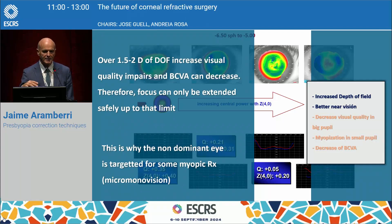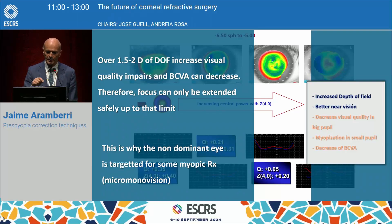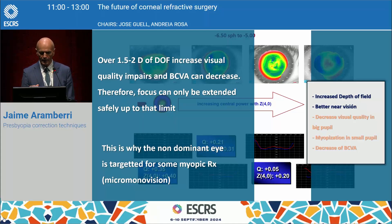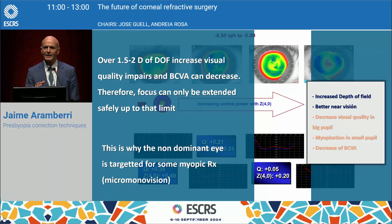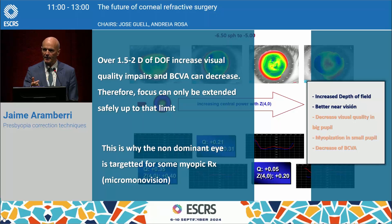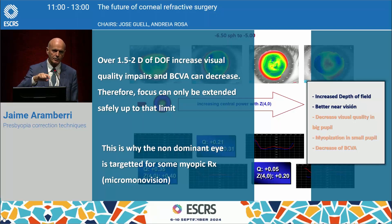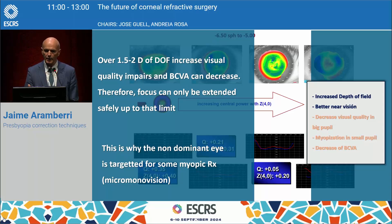We have learned — and this is general in most papers — that over 1.5 to 2 diopters of depth of focus increase, visual quality impairs and therefore best corrected visual acuity decreases. So you can extend the depth of focus up to a certain limit, and this is why all platforms have arrived at the same conclusion: we have to use micro-monovision to add something to the eye playing more in near, so that this addition of refraction plus the spherical aberration will achieve functional near vision.